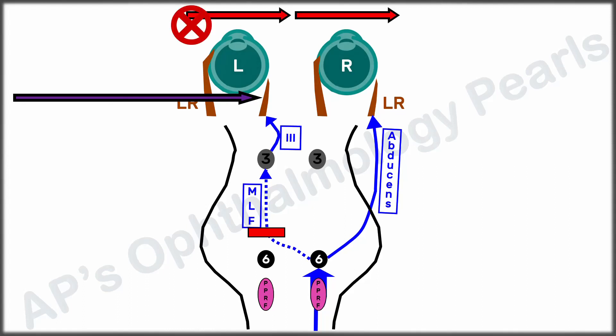At the same time, due to Hering's law, the extra innervation to this medial rectus also flows to its yoke muscle, the right lateral rectus, thus producing nystagmus in the contralateral abducting eye.